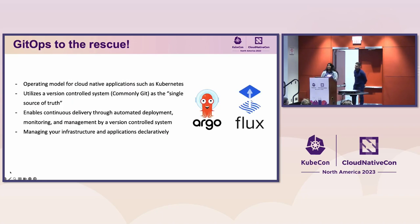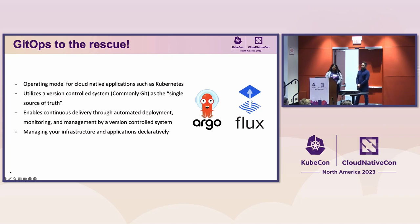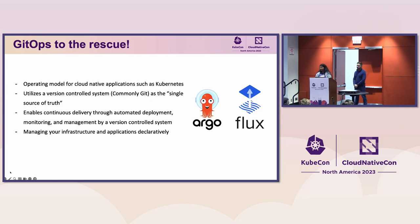For anyone new to GitOps or any of these tools: GitOps is an operating model for cloud-native applications like Kubernetes. It utilizes a version-controlled system — most commonly Git, but also OCI registries — as the single source of truth. It enables continuous delivery through automated deployment, monitoring, and management. There's an audit trail, everything's locked down, and you manage your infrastructure and applications declaratively. You can see everything in code, tell exactly what's deployed, and it's reusable.